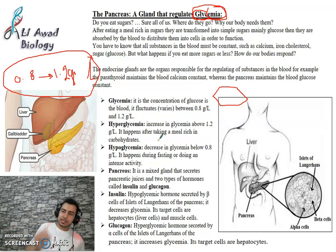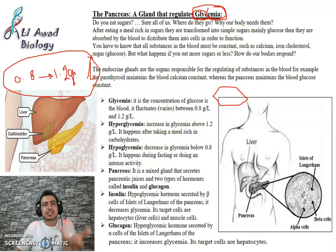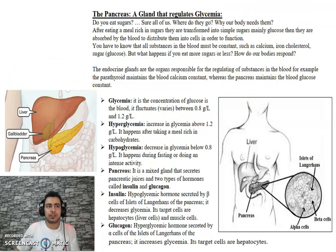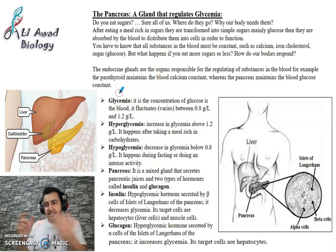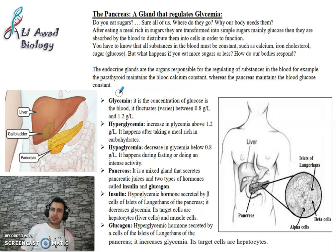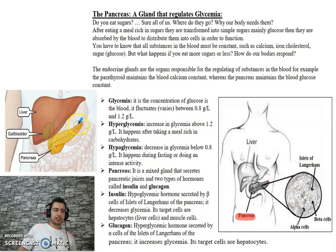So glucose in the blood — glycemia — is regulated. What regulates the amount of glucose in the blood? Just as the parathyroid gland on the thyroid regulates calcium in the blood, glycemia is regulated by an organ called the pancreas.